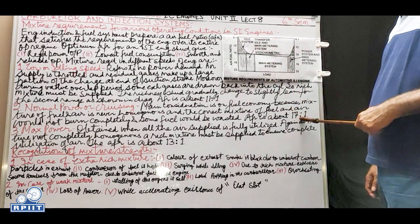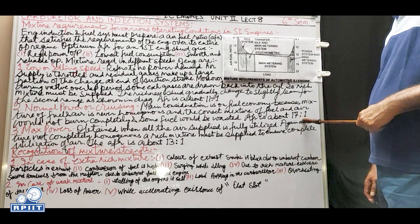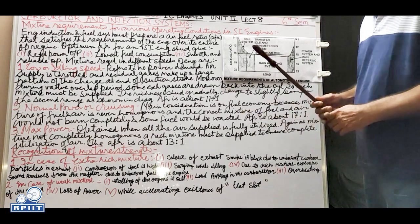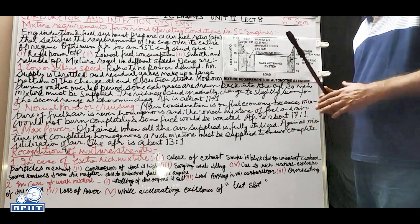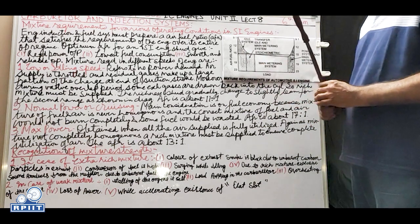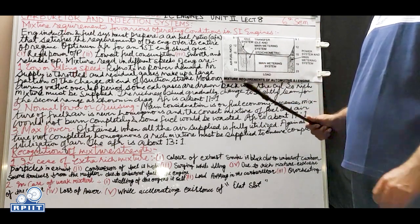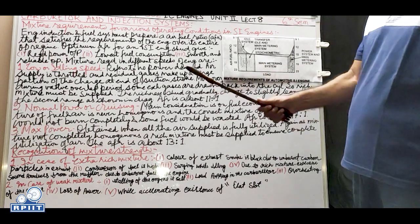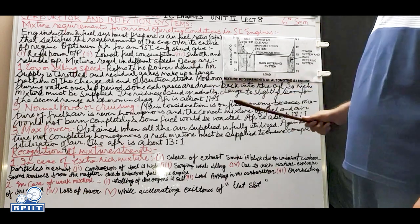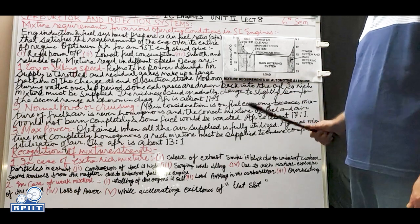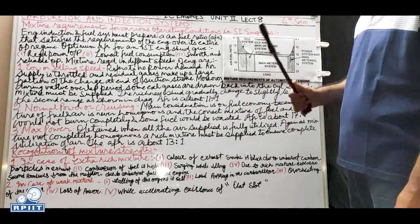The lean mixture at cruising gives the best fuel economy. Good driving habits mean maintaining a constant speed; most manufacturers say around 55 km/h is ideal for the greatest fuel economy, whether for 4-wheelers or 2-wheelers.